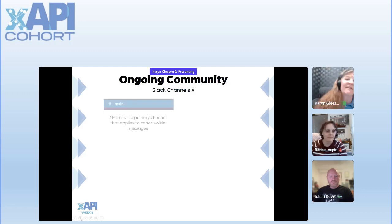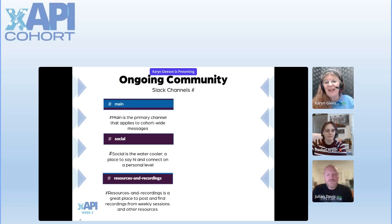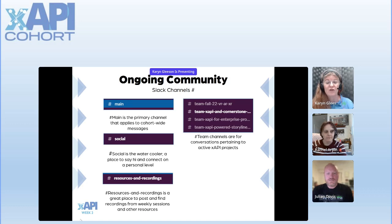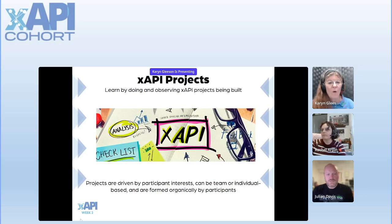In terms of the Slack community, if you haven't joined it, please do. Main is the main channel where we have announcements. Social is kind of like a water cooler — post anything you'd like there. Recordings and resources will be posted there and are also on xapicohort.com. Hashtag team channels are for project teams, and hashtag discuss channels are for topical conversations like badging or beginner discussions.